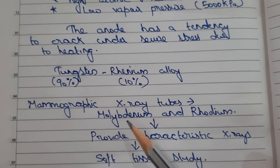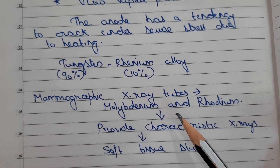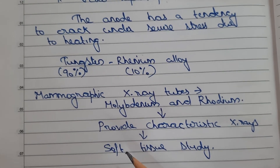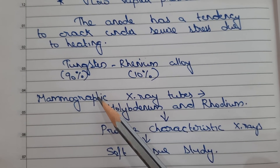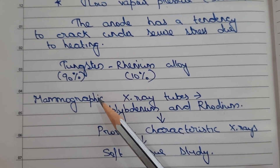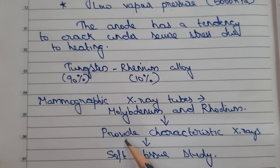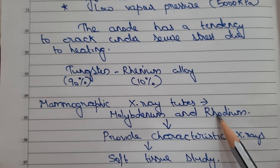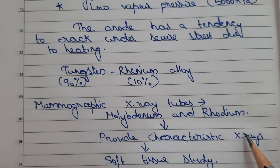For mammographic x-ray tubes, we can use molybdenum and rhenium as target materials. These materials provide characteristic x-rays which enable soft tissue study. Since mammography is a study of breast tissue — a soft tissue study — molybdenum and rhenium are preferred as they produce the characteristic x-rays needed.